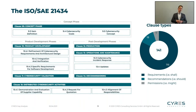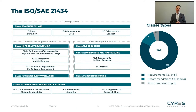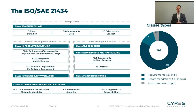The standard then goes into the development phase, starting with a concept phase, defining cybersecurity goals, deriving a concept, and going into development — covering the left side of the V and the right side of the V, including validation. After the development phase comes the production, operation, and decommissioning — also called the post-development phase. The standard closes with chapter 15, the distributed development, defining how customer and supplier need to work together. In this version, there are more than 140 new requirements, recommendations, and permissions that need to be fulfilled to be compliant to the standard.